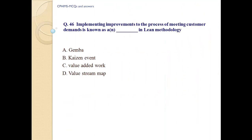Question number 46. Implementing improvement to the process of meeting customer demand is known as what in lean methodology? a. Zimba; b. kaizen event; c. value-added work; d. value stream map. The correct answer is B — kaizen event.